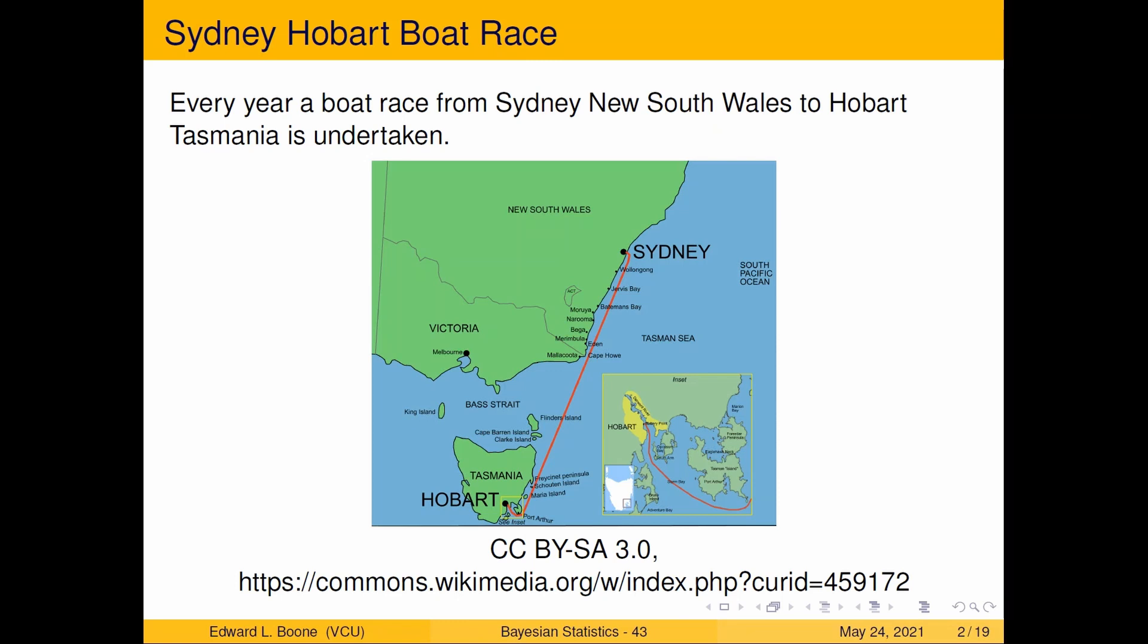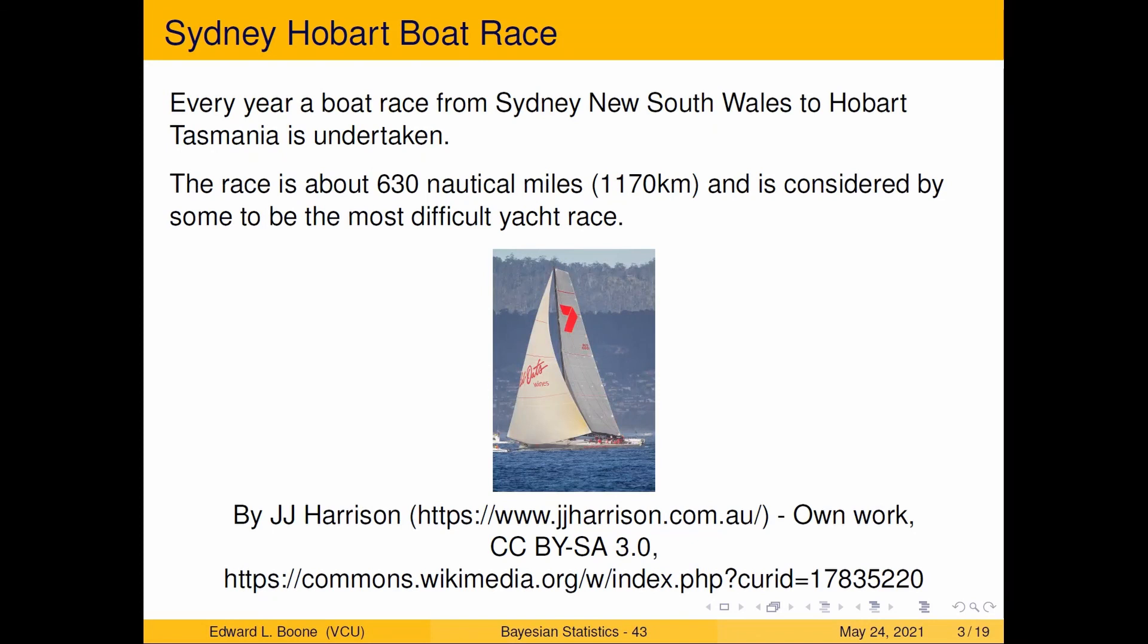So it runs from Sydney all the way to Hobart, it's a really long race. Here's what one of the boats looks like, this is Wild Oats. I think it's won the most of the races. The pictures are from Wikipedia and here's the reference to it if you want to go get it.